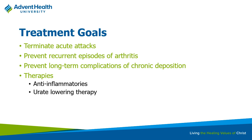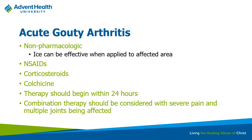Our goals for gout are: treat the acute attack, then look at ways to prevent recurrent symptoms—similar to asthma controller vs. rescue therapy. For non-pharm, ice can help with pain. NSAIDs are used and we know a lot about them. Corticosteroids like prednisone can deal with inflammation, typically in short courses of three to five days. Colchicine is a newer drug we'll discuss—it inhibits microtubules. Start therapy early, within 24 hours of an attack.